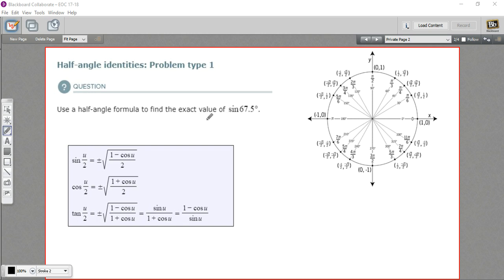So this first one says find the exact value of the sine of 67.5 degrees. This is our u over 2. What we want is to find the cosine of u. We need to double this first to get u. So 67.5 times 2 is going to be 135 degrees.